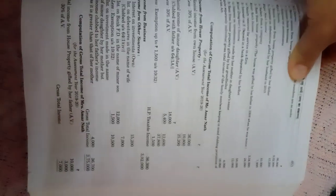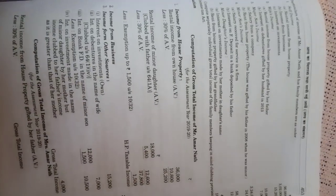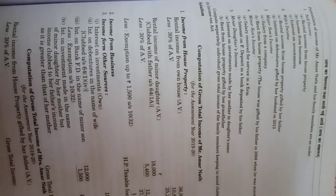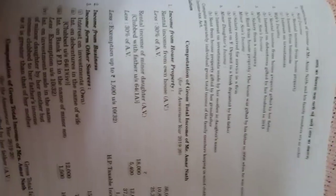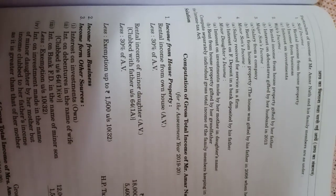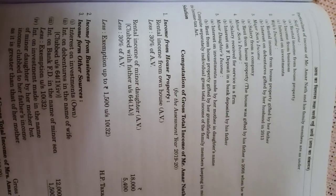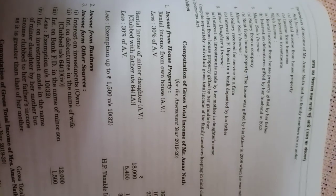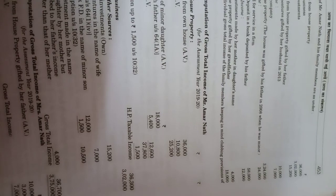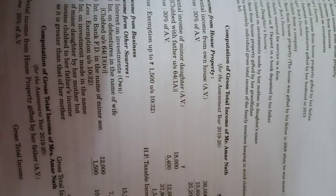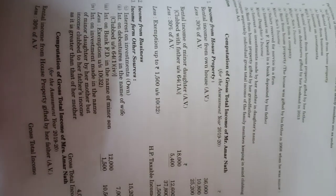Let us see example number four from your book. Particulars of income of Mr. Amarnath and his family members are: self income, wife's income, major son's income, minor son's income, and minor daughter's income. The first income is rental income from house property — ₹36,000. In the solution, rental income from Mr. Amarnath's own house: income from house property is ₹36,000.